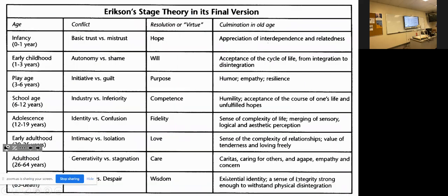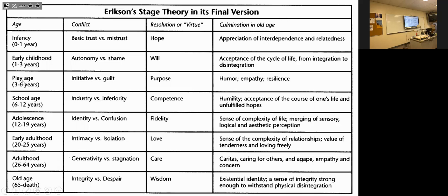He proposed eight stages of psychosocial development, which should be in your book as well. They go from infancy, early childhood, play age, school age, adolescence, early adulthood, adulthood, and late adulthood. This aligns with a lot of what we see with other theories too, like attachment theory. Children attach not just to parents but to any caregiver — it could be grandparents or anyone around them.